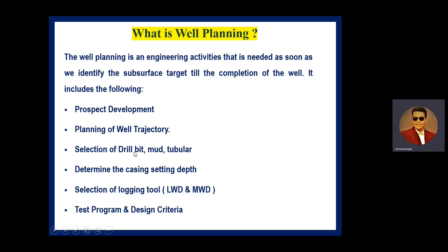For drill bit selection, we use diamond bits if the formation is very hard, and roller cone bits — either mill-tooth or insert-type — if the formation is soft or medium soft. The mud is used to control hydrostatic pressure, and the tubulars are used to produce hydrocarbon commercially from the subsurface to the surface. We also determine casing setting depths — the lengths of conductor casing, surface casing, intermediate casing, production casing, etc.